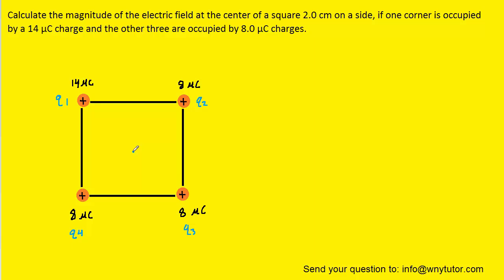With that concept in mind, we can look at the center of the square. Charge 1, because it's positive, produces an electric field pointing away from it, so we draw a vector pointing away from charge 1 and label it E1. Charge 2 is also positive, producing E2 pointing away from it. Charge 3 is positive, producing E3 pointing away from it. Finally, charge 4 is positive and produces E4 pointing away from it.